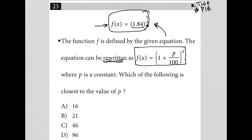So I'm going to write down what that means. That would mean that 1.84 to the x over 4 power is equal to, it's equivalent to, 1 plus p over 100 to the x power. That's the first thing. The second thing is we're trying to solve for p.